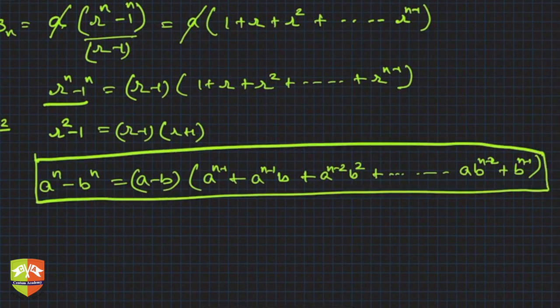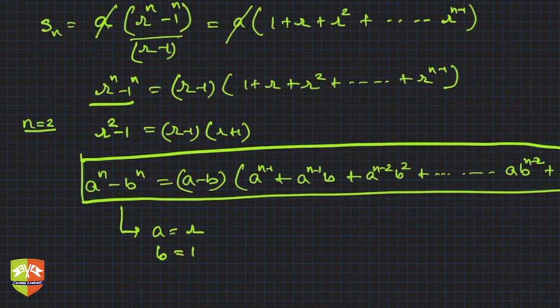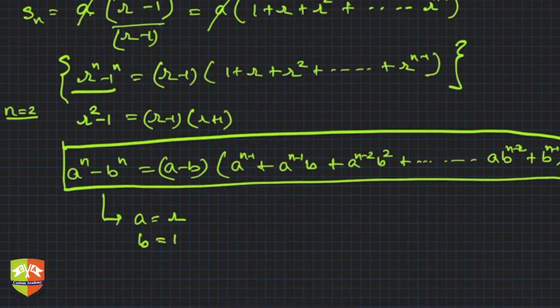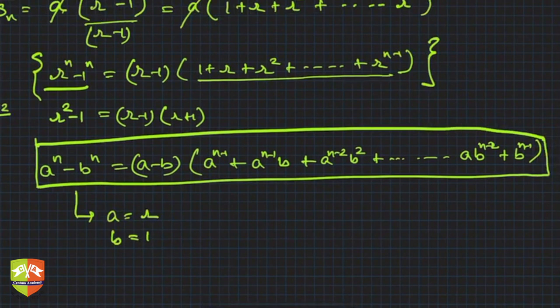Another piece of information for you. In this identity if you put a is equal to r and b is equal to 1 you will get this. So it's coming from there. Hence you can find out the sum of this GP easily: r^n - 1 divided by r-1. Is this clear? Always remember this is a very important identity.